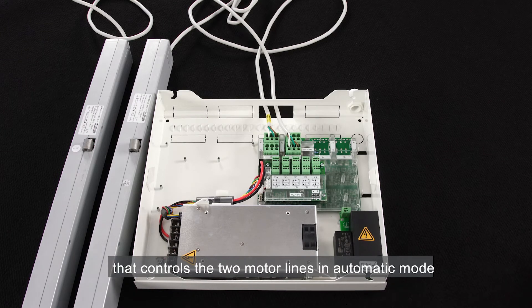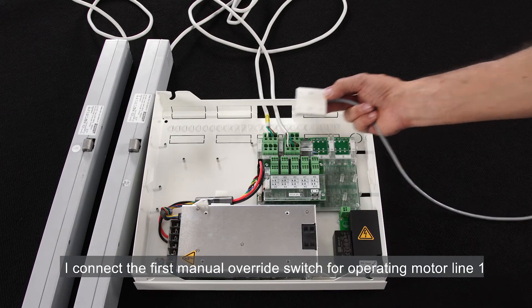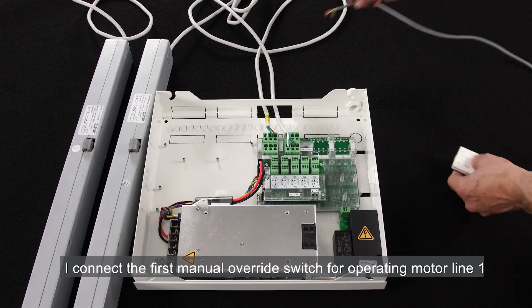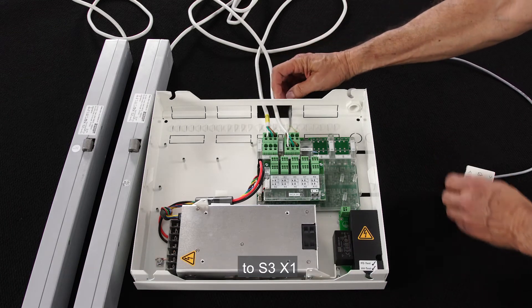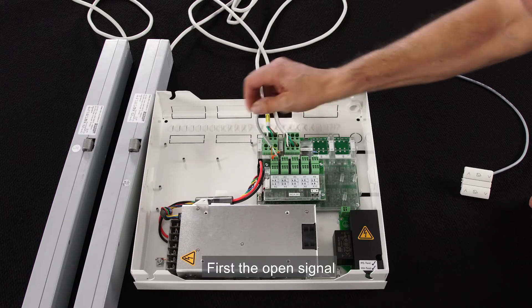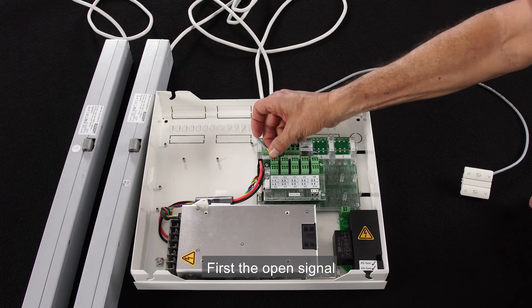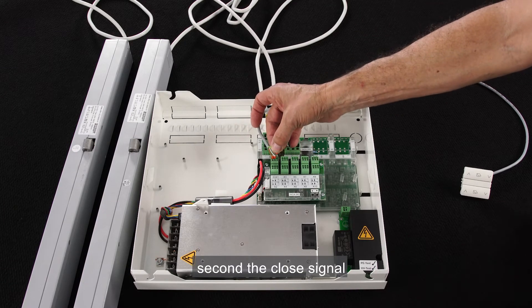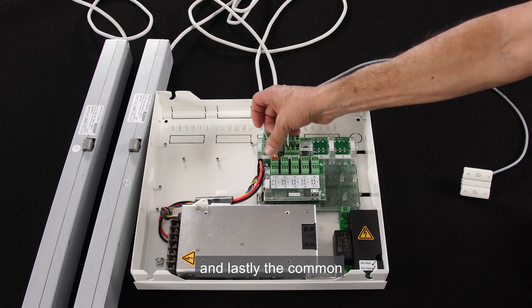I connect the first manual override switch for operating motor line 1 to S3X1. First, the open signal. Second, the closed signal. And lastly, the common.